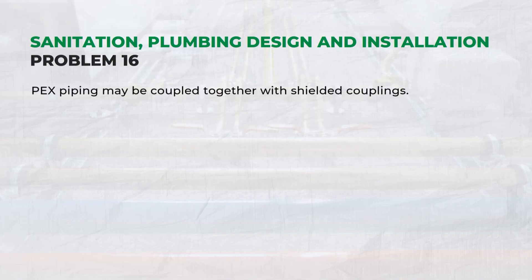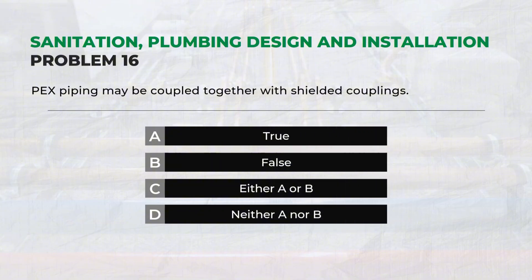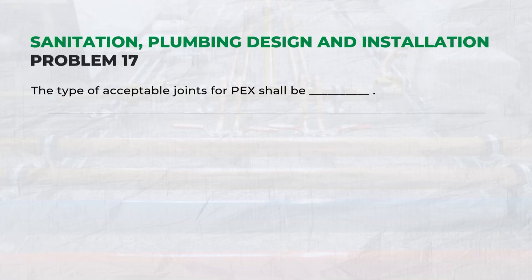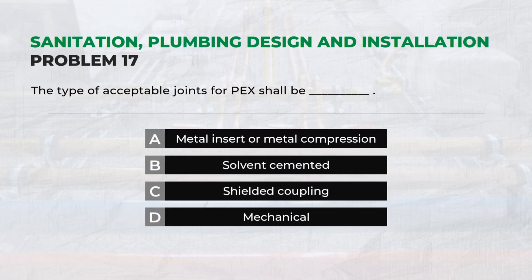Pex piping may be coupled together with shielded couplings. Answer: B. False. The correct coupling type is: A. Metal insert or metal compression.